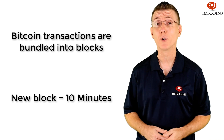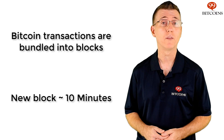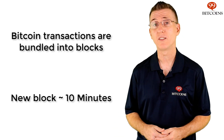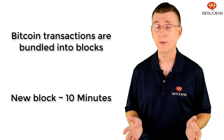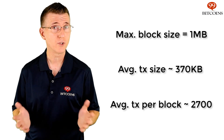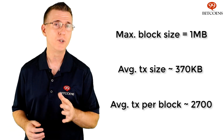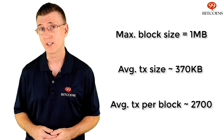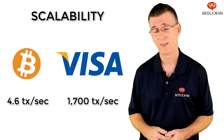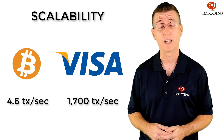Bitcoin transactions don't get confirmed instantly. In order for a transaction to be considered confirmed, it needs to be included as part of a block of transactions on the Bitcoin ledger, known as the blockchain. A new block of transactions is added to the blockchain on average about every 10 minutes. The maximum capacity for each block of transactions is 1 megabyte. When you consider the average Bitcoin transaction size, a block is able to hold about 2,700 transactions — that's 4.6 transactions a second, and that's not a lot.